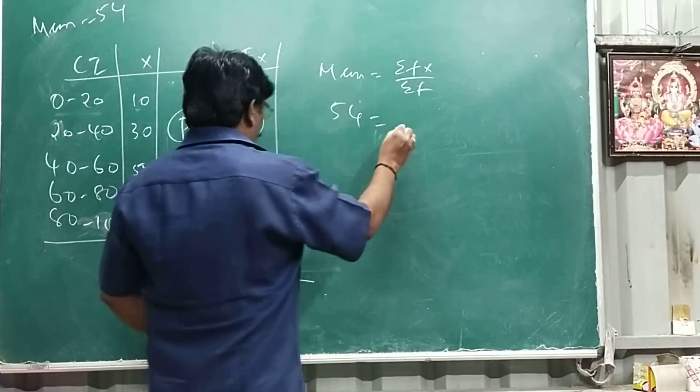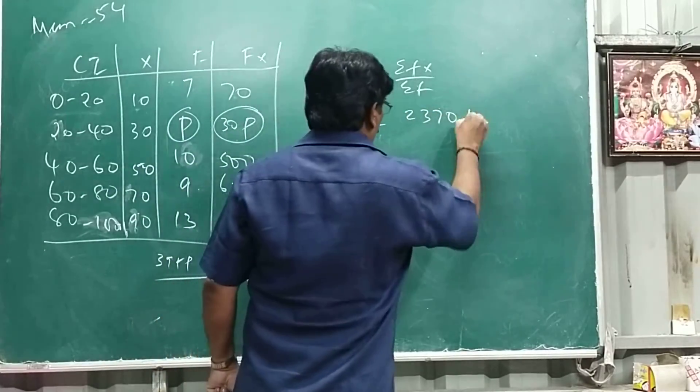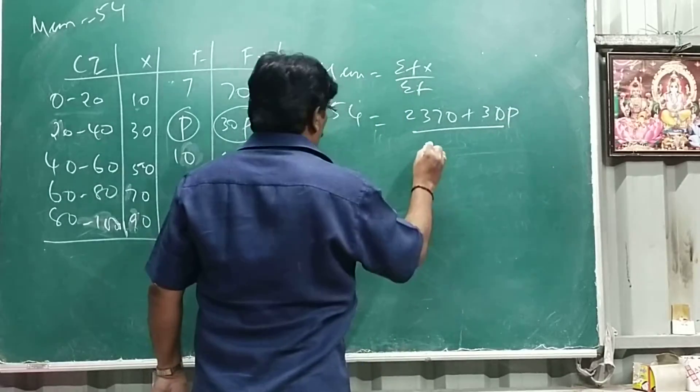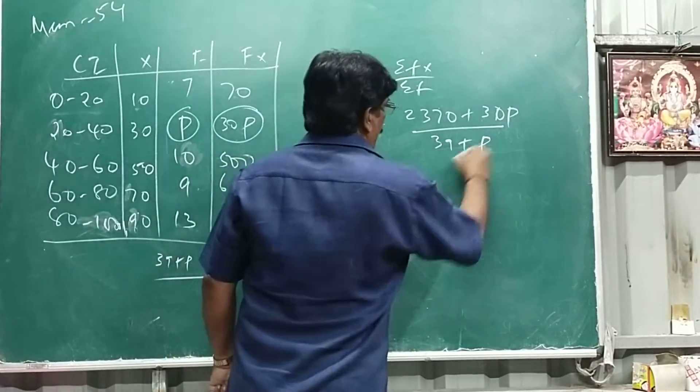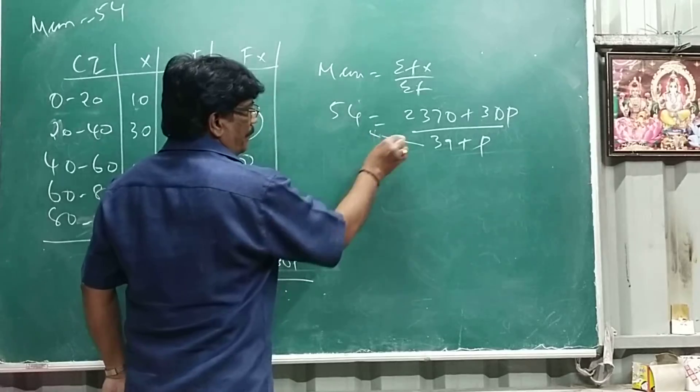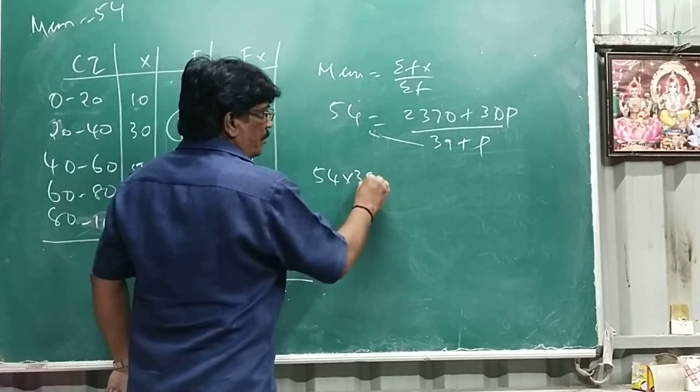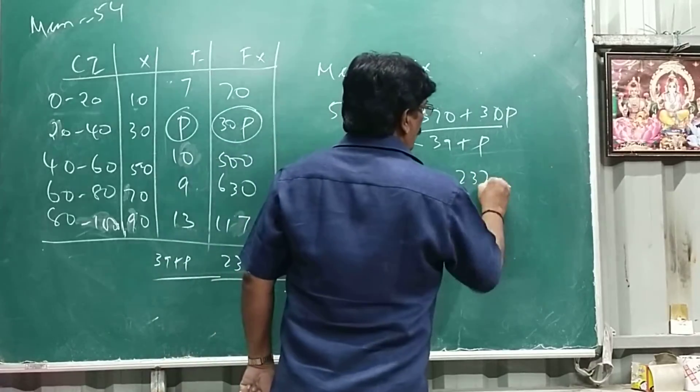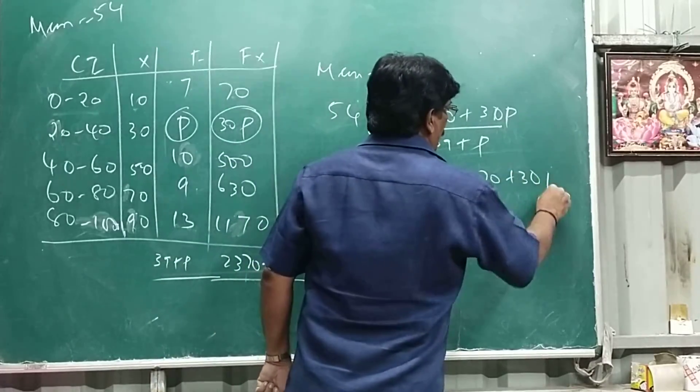So 54 equals 2370 plus 30p by 39 plus p, so now cross multiply. 54 into 39 plus 54p equals 2370 plus 30p.